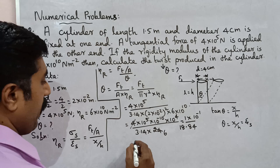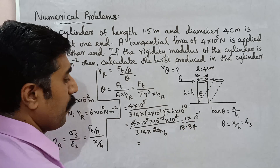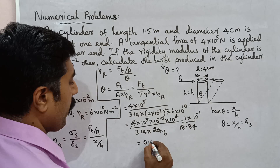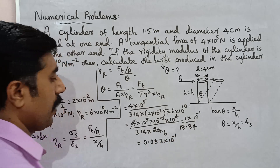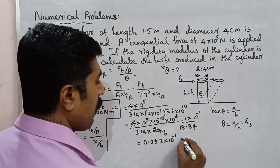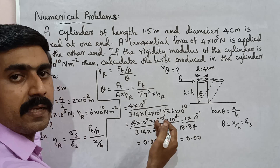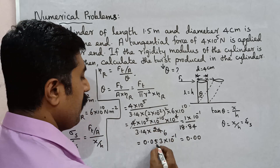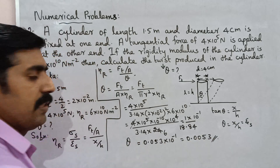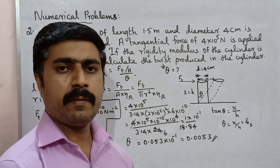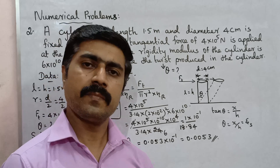Dividing, the answer is 0.053 into 10 power minus 1, which we can write as 0.0053. So theta equals 0.0053 radians. You can practice this and share with your friends. All the best, thank you.